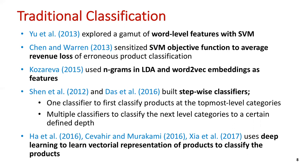The first usage of deep learning comes from COSEREVA, using n-gram topic models and word embeddings as features for classification. For improved features, Shen et al. and Das et al. showed that a stepwise classifier improved performance: a first-level classifier predicts the top-level category, and one classifier per second level predicts the next, and so on. Most recently, Ha et al., Cavigier, Murakame, and Sia et al. use deep learning to produce vector representations of products, with a final softmax layer across all probabilities.